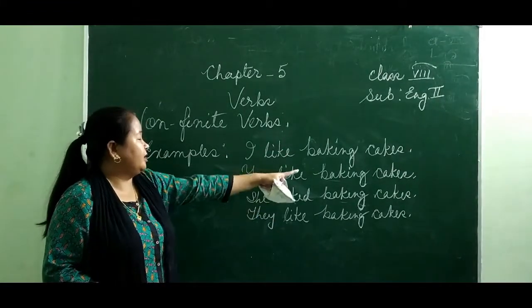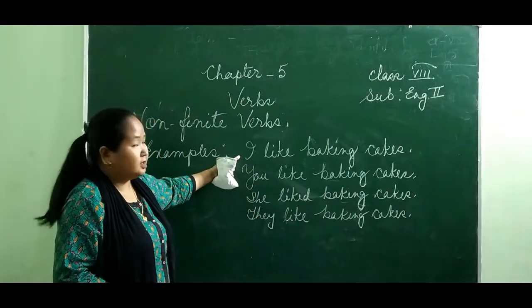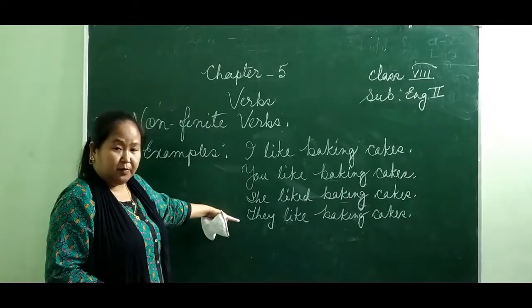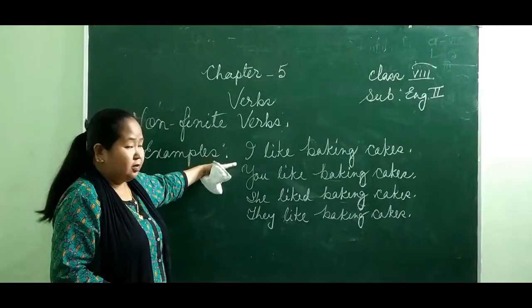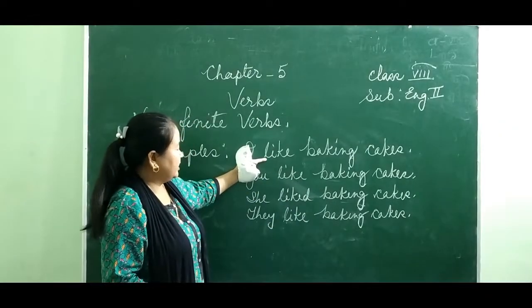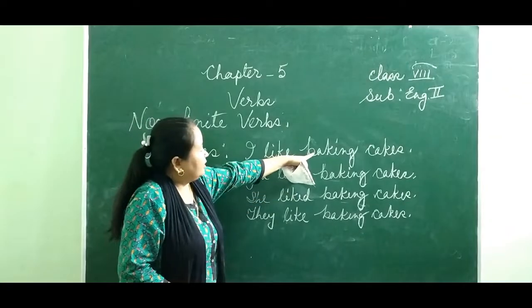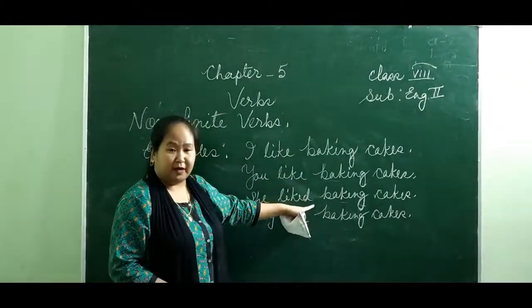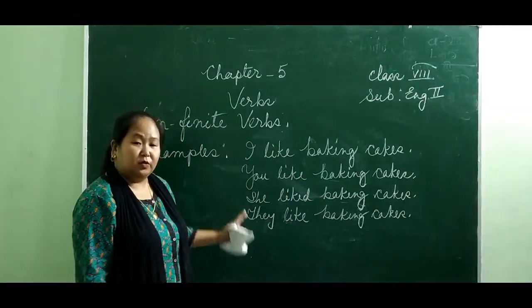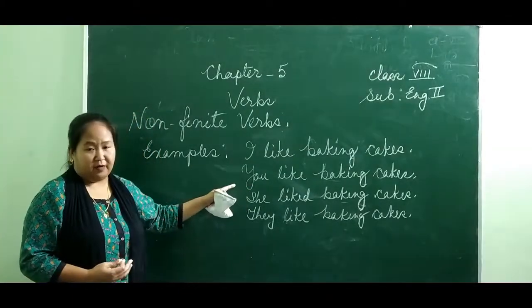These are all different persons — first person singular, second person, third person singular, third person plural — but the verb 'baking' remains the same. The verb doesn't change whatever be the time of action, number of people, or whoever the person doing the action. So they are called non-finite verbs.